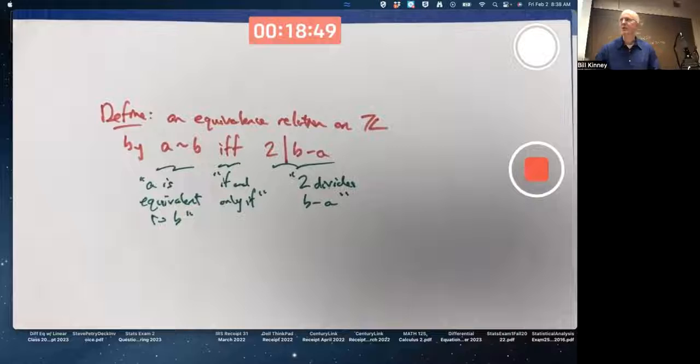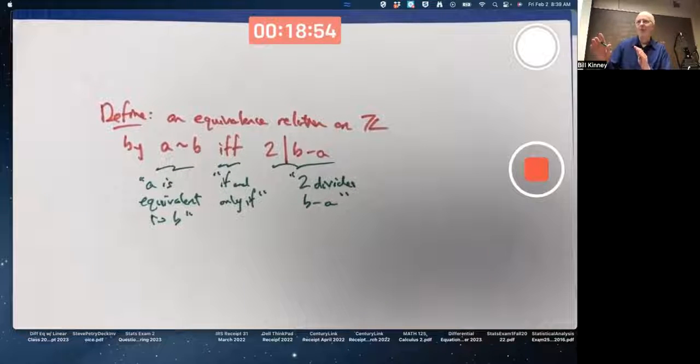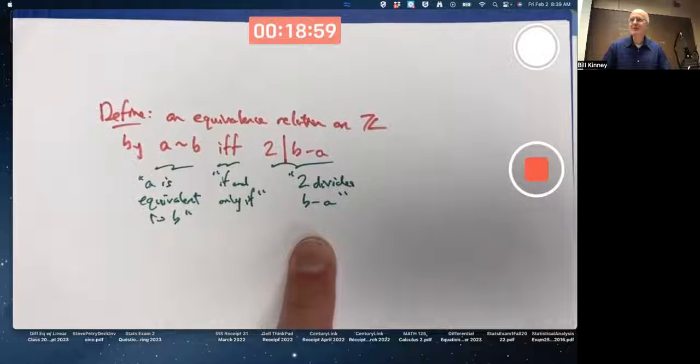And this symbol is saying two divides B minus A. Hey, wait a minute, I thought we're not doing subtraction. Well, we are doing subtraction right now. We're not thinking about it as a group operation, but we are doing subtraction right here. Two divides B minus A.